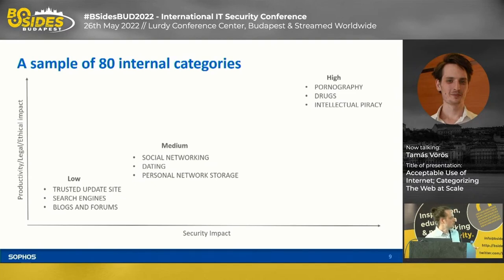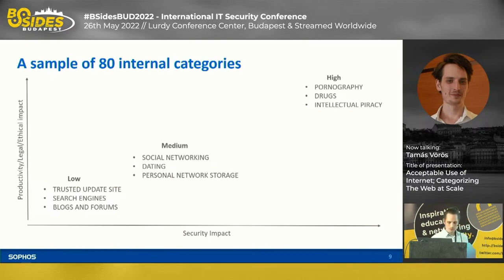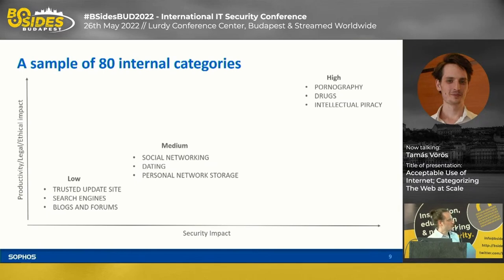Then there are social networking sites — you can argue how risky they are, but it's more likely you'll get infected from a Facebook or Dropbox link than from a trusted update site. And on the far right, we have the extreme categories: pornography or drugs, which are simply infested with malicious content. Then there's the other aspect — negative impact on productivity, legal impact, or ethical impact. No company wants to allow employees to browse pornography or buy illegal drugs during work hours. That's the motivation for tracking these classes.